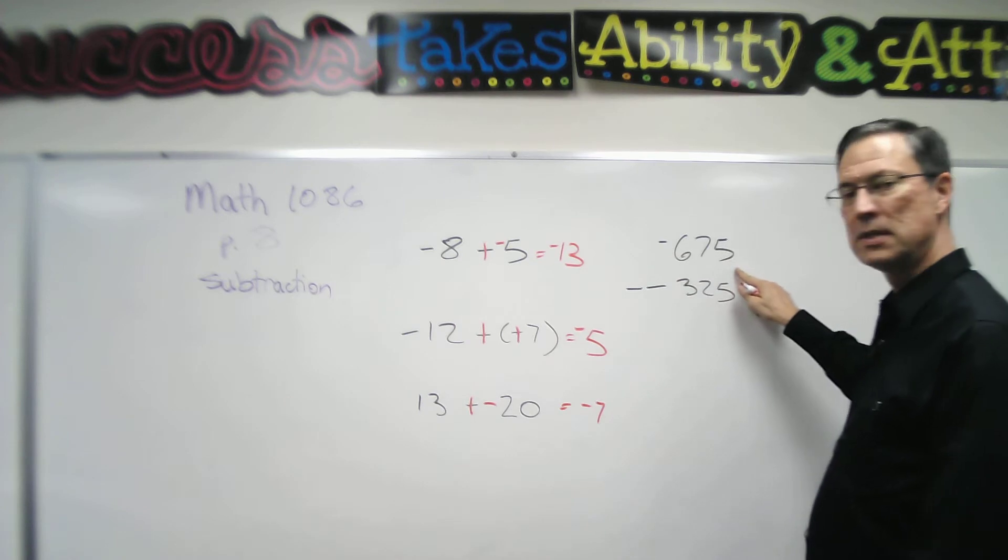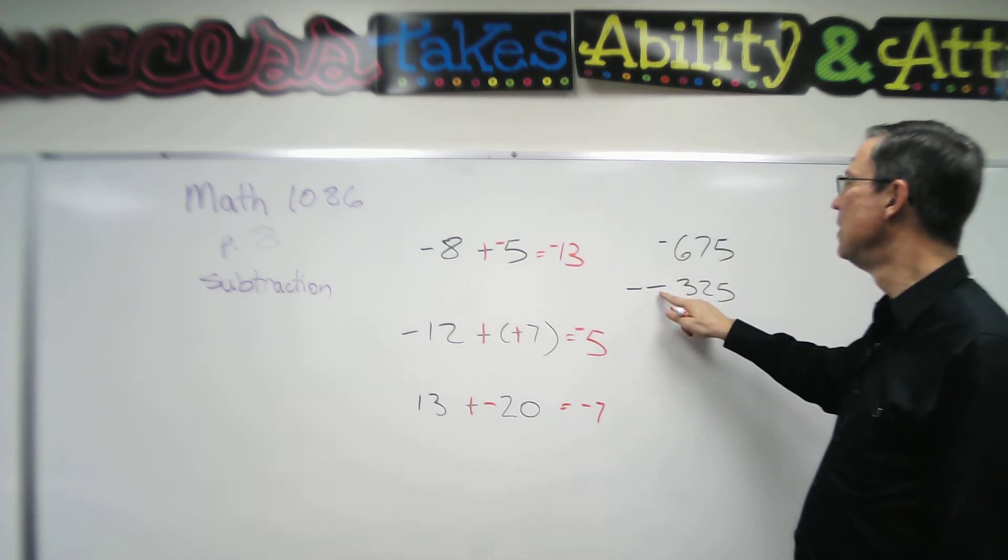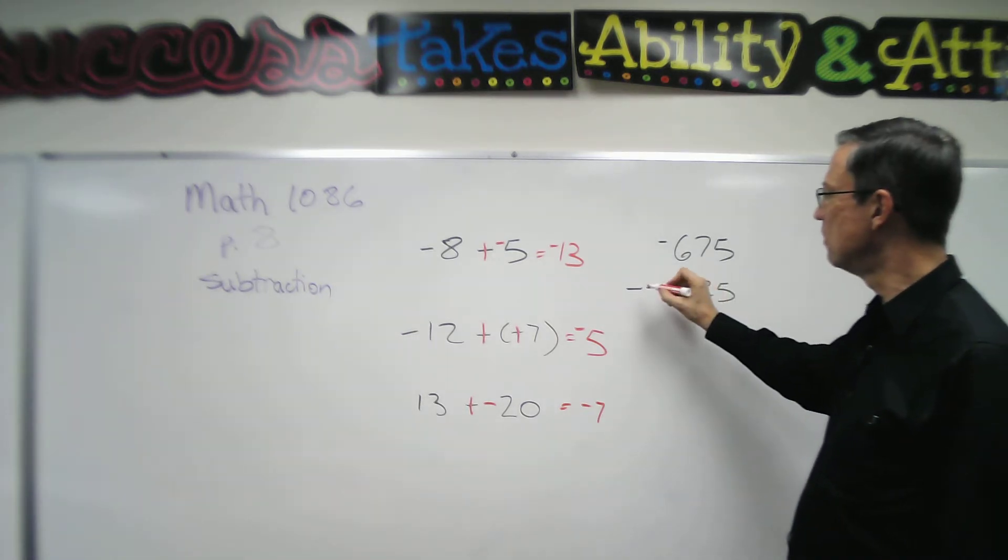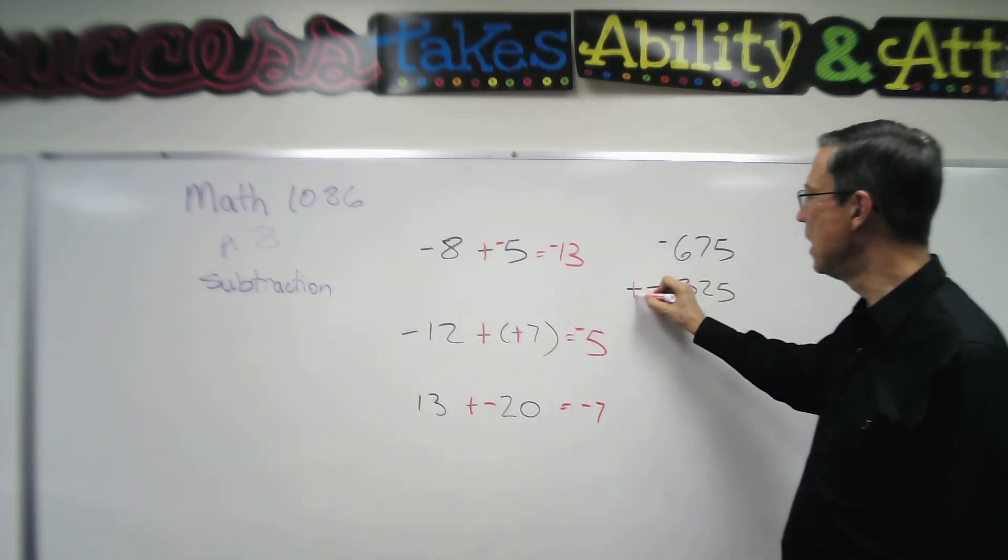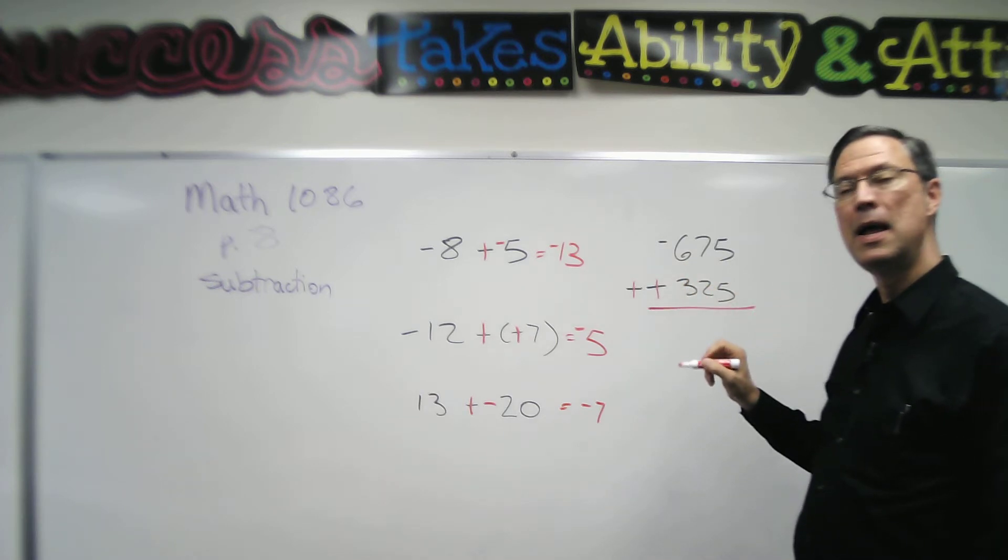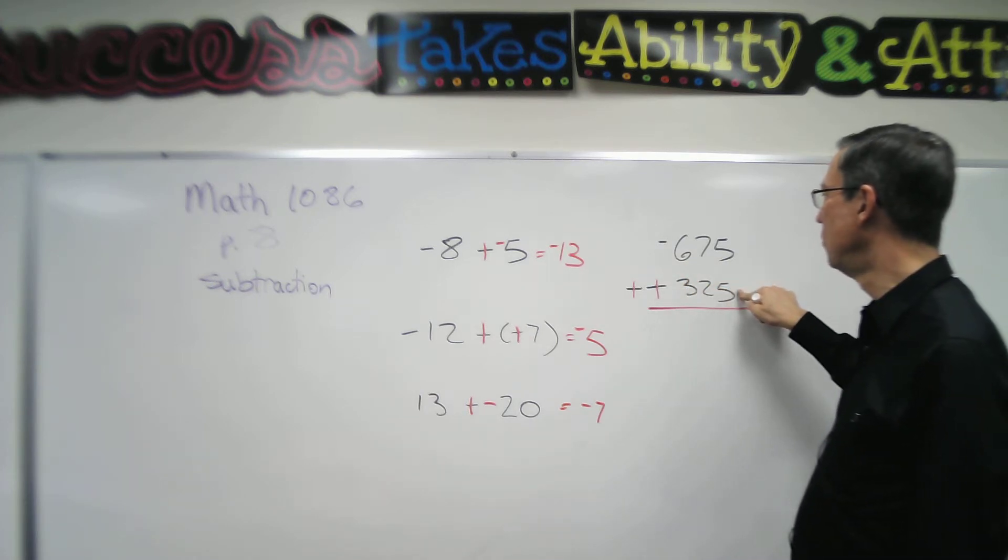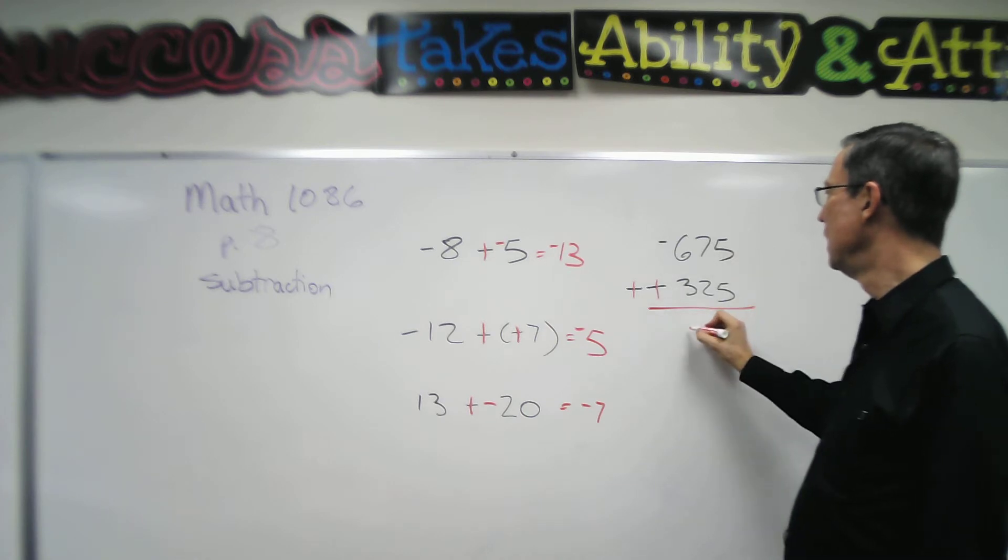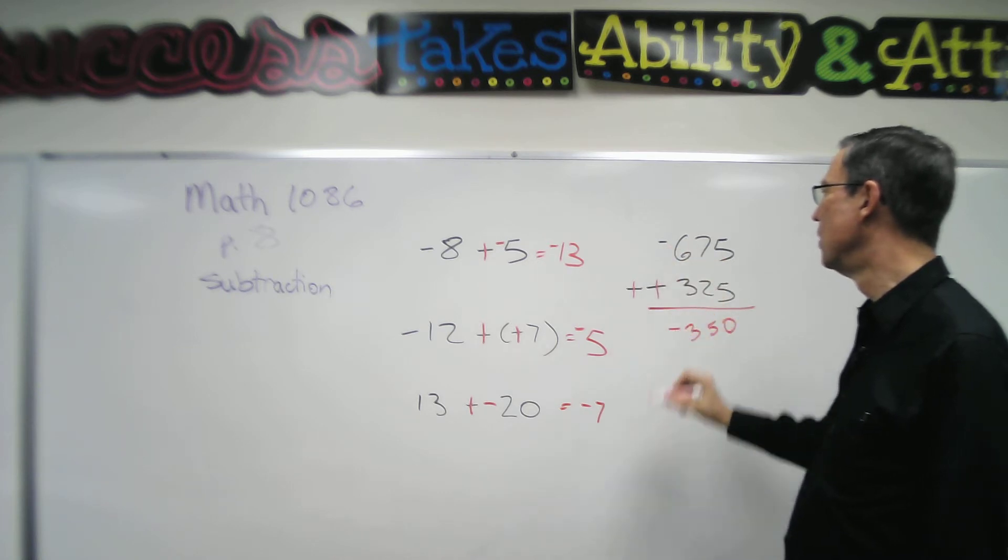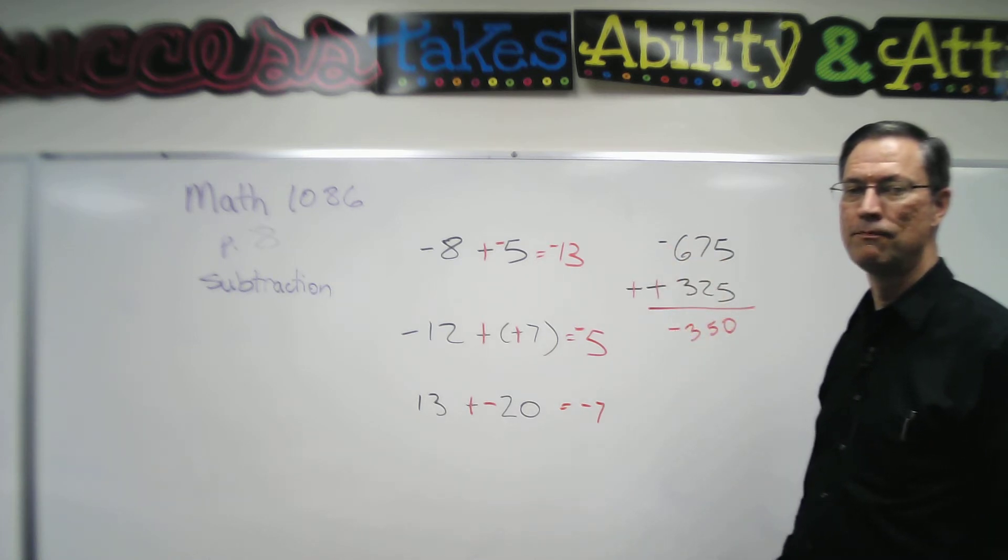So negative 675 subtract negative 325. We change subtraction to addition and change the second number to its opposite, and now we subtract the smaller from the larger and get 350, and keep the sign of the larger.